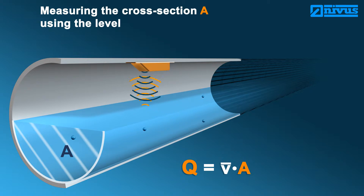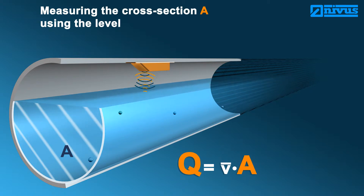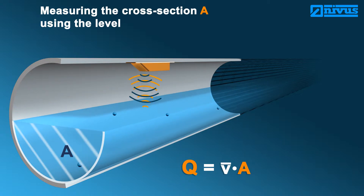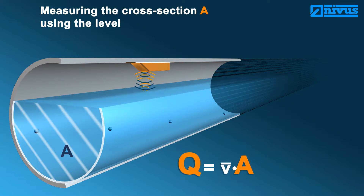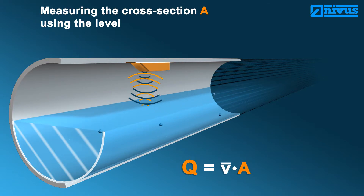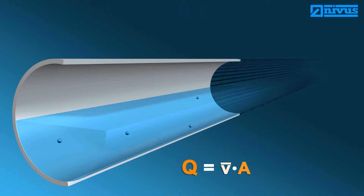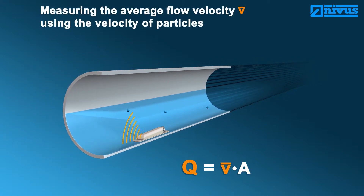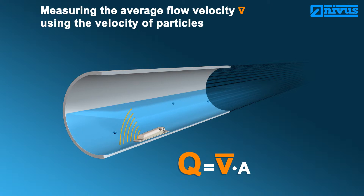If the level changes, the flow cross-section will change accordingly, and hence flow will change as well. The flow velocity is detected by measuring the particle velocity. Most media, particularly wastewater, contain dirt particles or gas bubbles moving with the same velocity as the medium. The velocity of the particles is measured using ultrasound. As soon as the velocity changes, the flow normally changes as well.